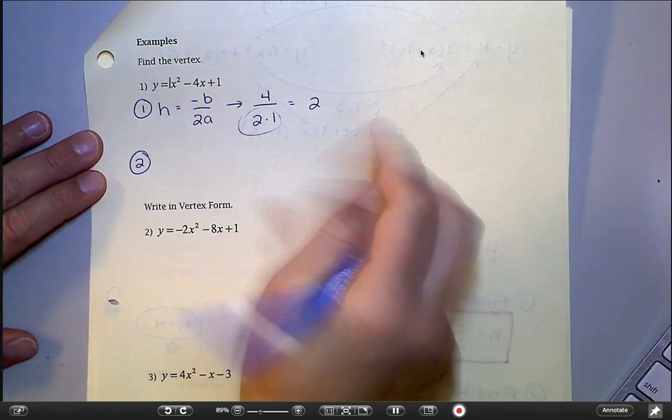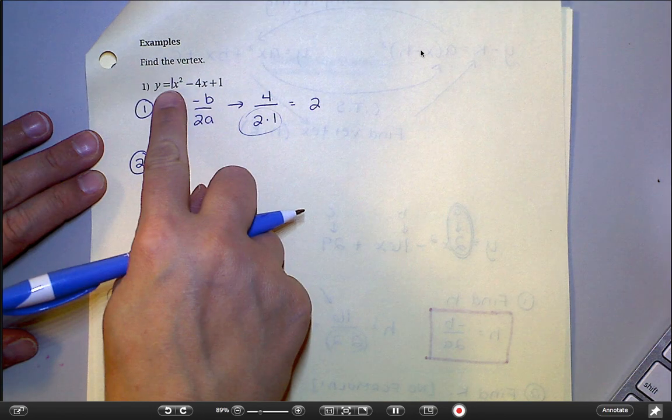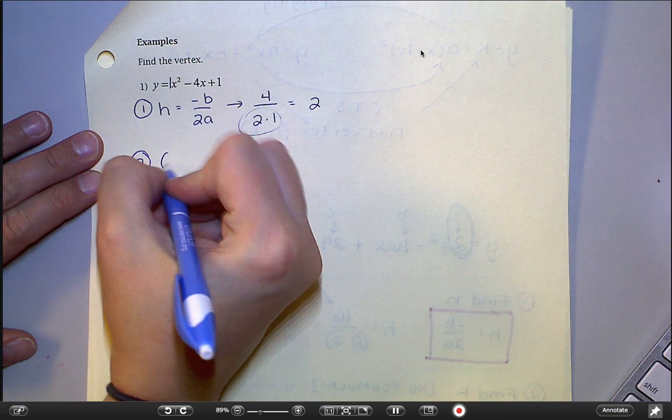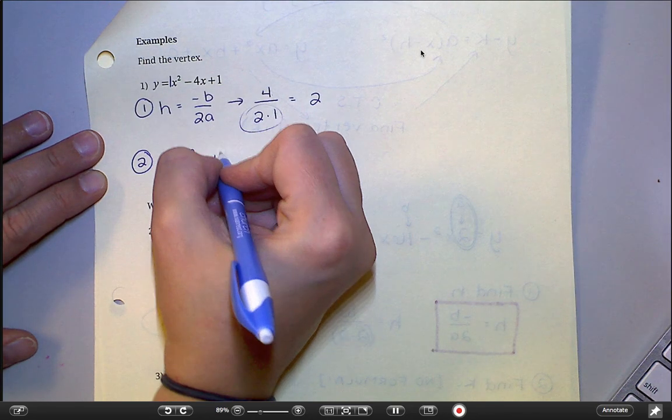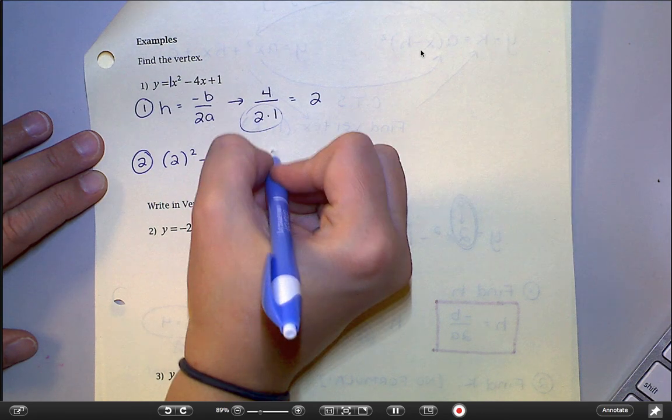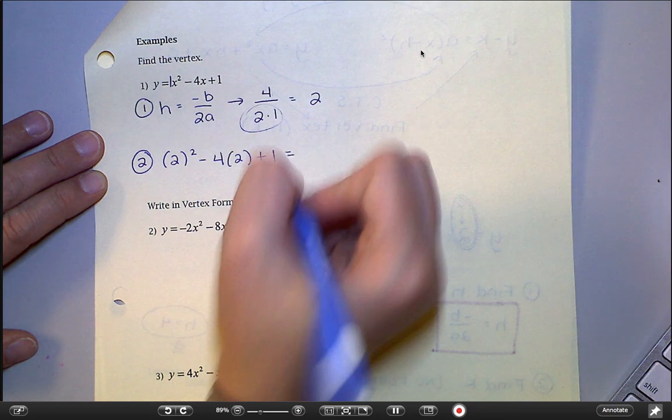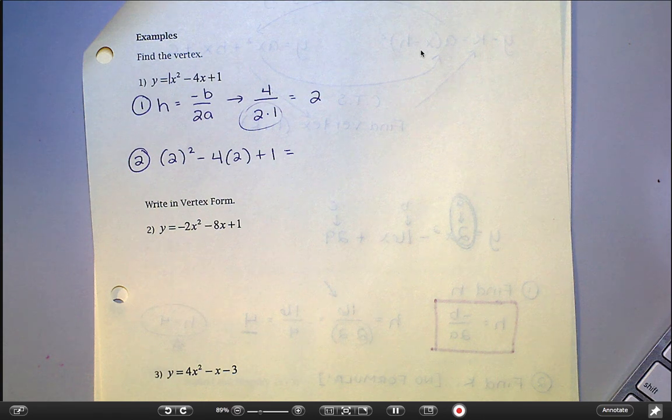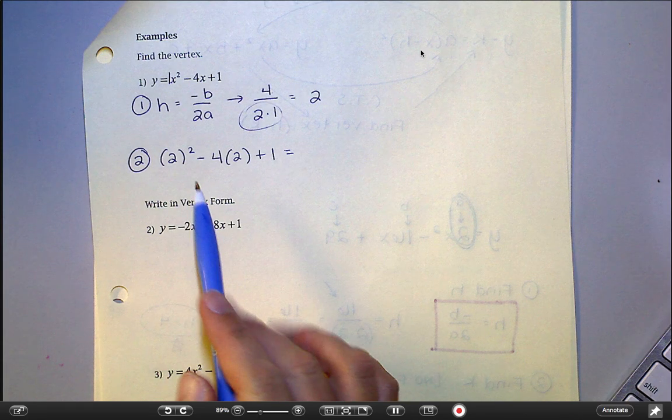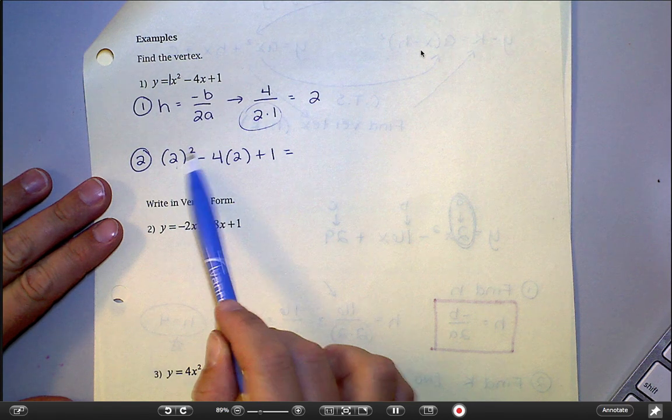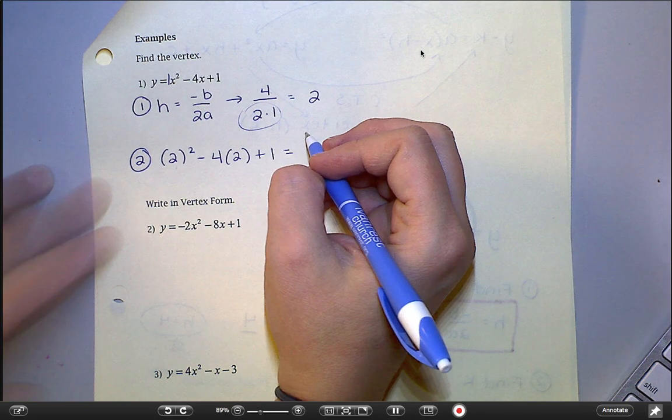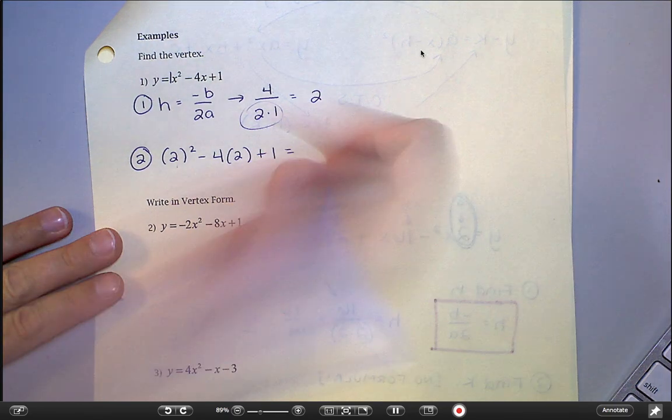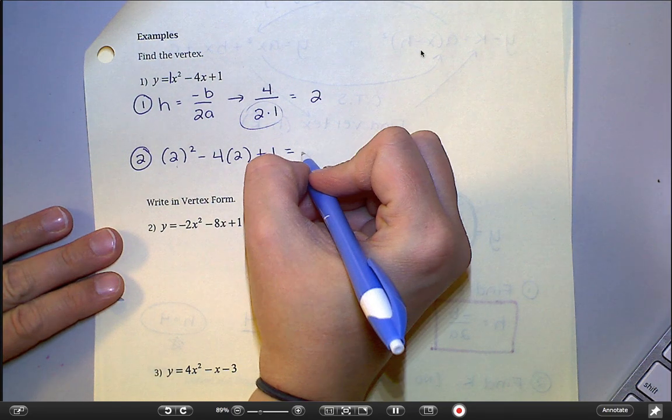Step 2, I'm going to find k by plugging that 2 in for x into my equation. So I'm going to have 2 squared minus 4 times 2 plus 1. That could go straight into a calculator, but I would recommend putting it all in at once so you don't mess up order of operations. Or you can work it through by hand. This is 4. This is negative 8. So 4 minus 8 is negative 4 plus 1 is negative 3. So this is negative 3.